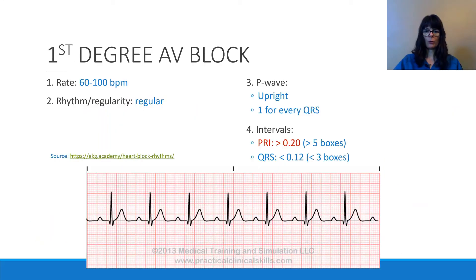When we analyze a rhythm strip, we always approach it methodically by looking at rate, rhythm regularity, the P waves, and the intervals. In a first-degree AV block, the rate is typically normal at 60 to 100, and it is usually pretty regular.